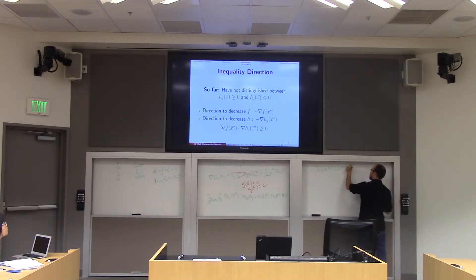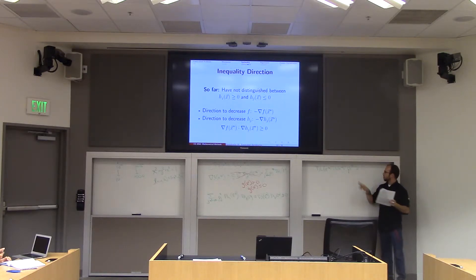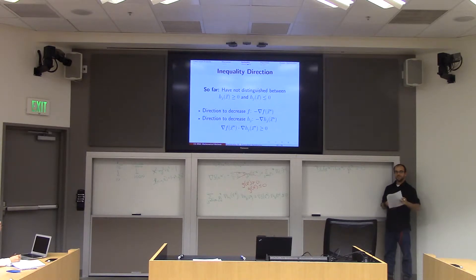Times mu star, now as a vector, that this thing is greater than or equal to 0. By the way, when I say this, what I mean is that every component of this vector is greater than or equal to 0. Yeah? So this is the nice, compact version of this.